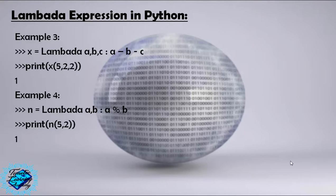Lambda expression in Python, example number three: X equals Lambda a, b, c: a minus b minus c. print(X(5, 2, 2)) — we will get one.